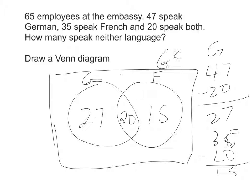My entire staff was 65 in the universe. I can add this all together: 27 plus 20 is 47, plus 15 is 62. Inside here, all of this is 62.